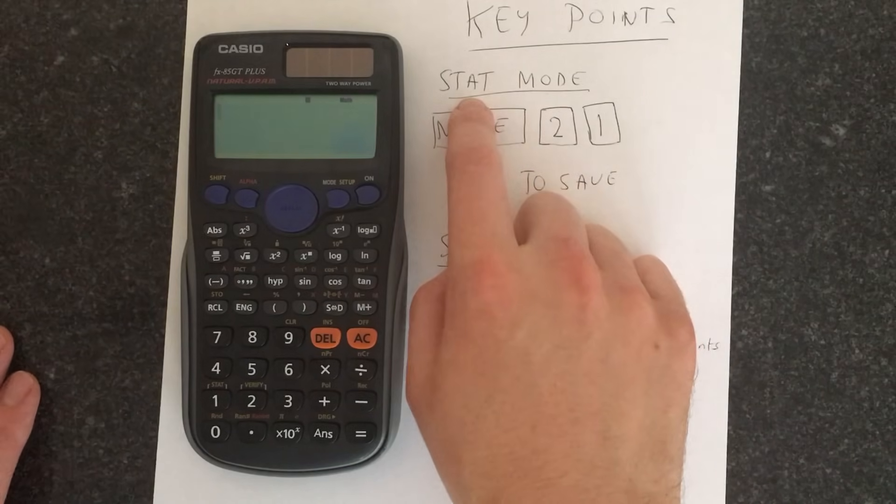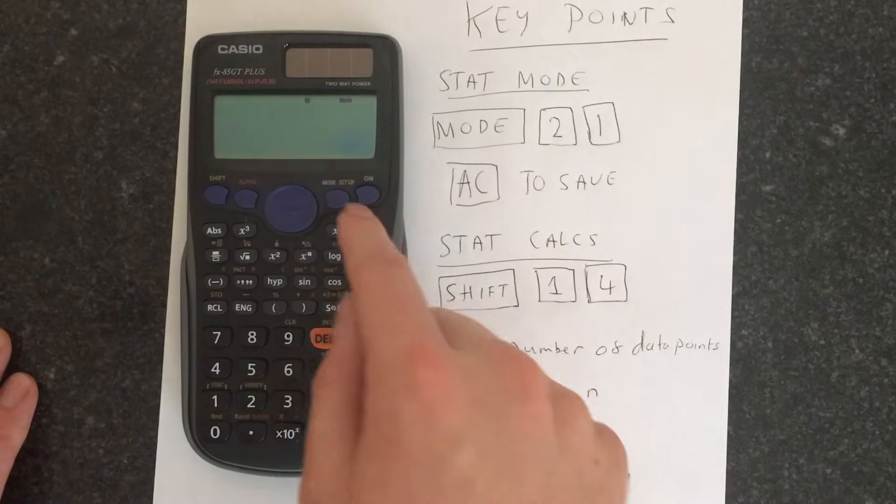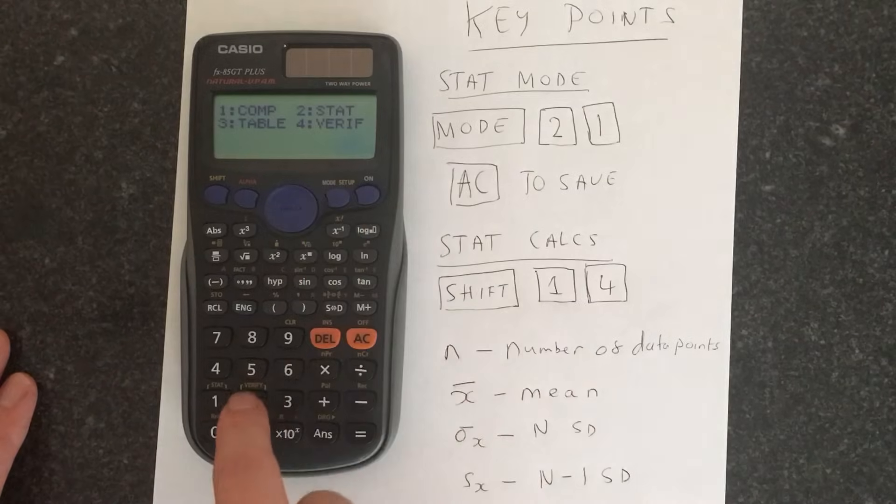The first thing is you need to access the STAT mode. You have to have your calculator in STAT mode to be able to do this. To do that you follow these instructions: do MODE and then 2 to access STAT.